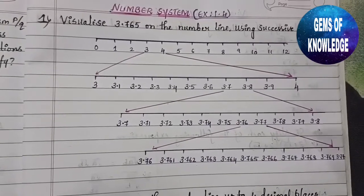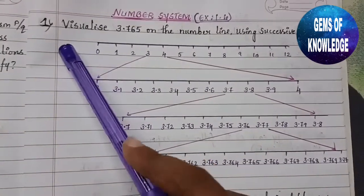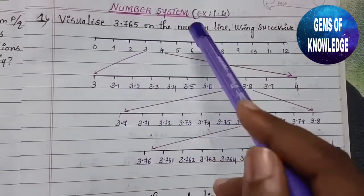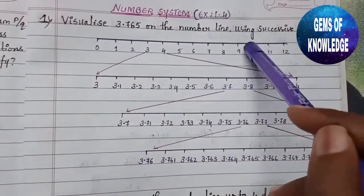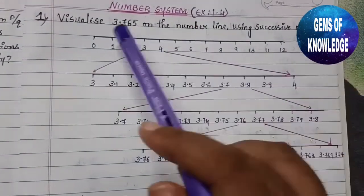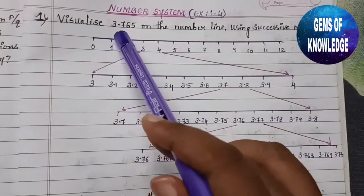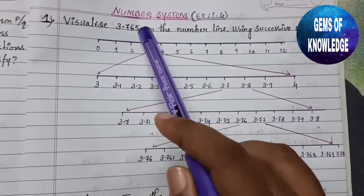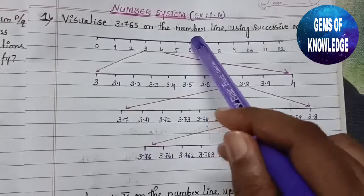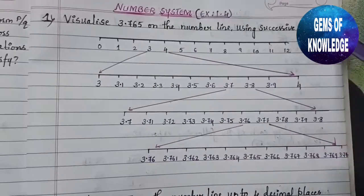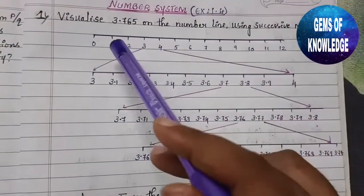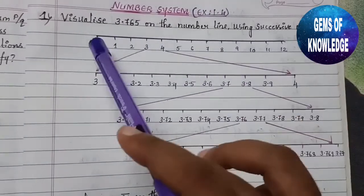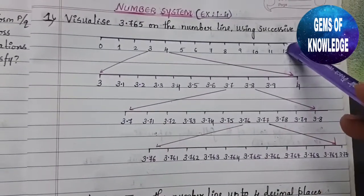Here the question is: visualize 3.765 on the number line using successive magnification. They have told us to visualize this number on the number line using the magnification process. What we need to do is draw a number line — I have roughly drawn a number line with each unit about one centimeter apart.